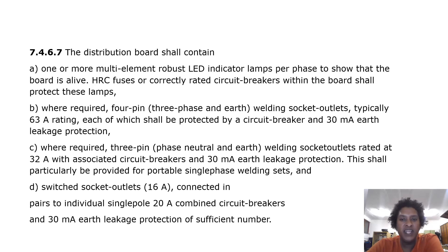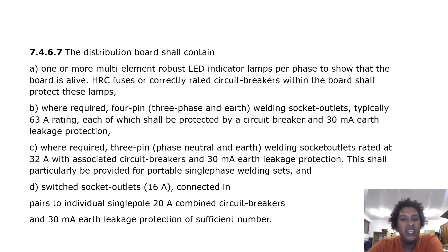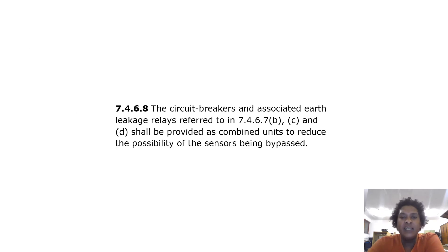We require 4-pin three-phase and earth welding socket outlets, typically 63 amp rating, each of which shall be protected by a circuit breaker and 30 milliamp earth leakage protection. We require 3-pin phase, neutral and earth welding socket outlets rated at 32 amp with associated circuit breakers and 30 milliamp earth leakage protection. This shall particularly be provided for portable single phase welding sets, and switched socket outlets of 16 amps connected in pairs to individual single pole 20 amp combined circuit breakers and 30 milliamp earth leakage protection. The circuit breakers and associated earth leakage relays shall be provided as combined units to reduce the possibility of the sensors being bypassed.